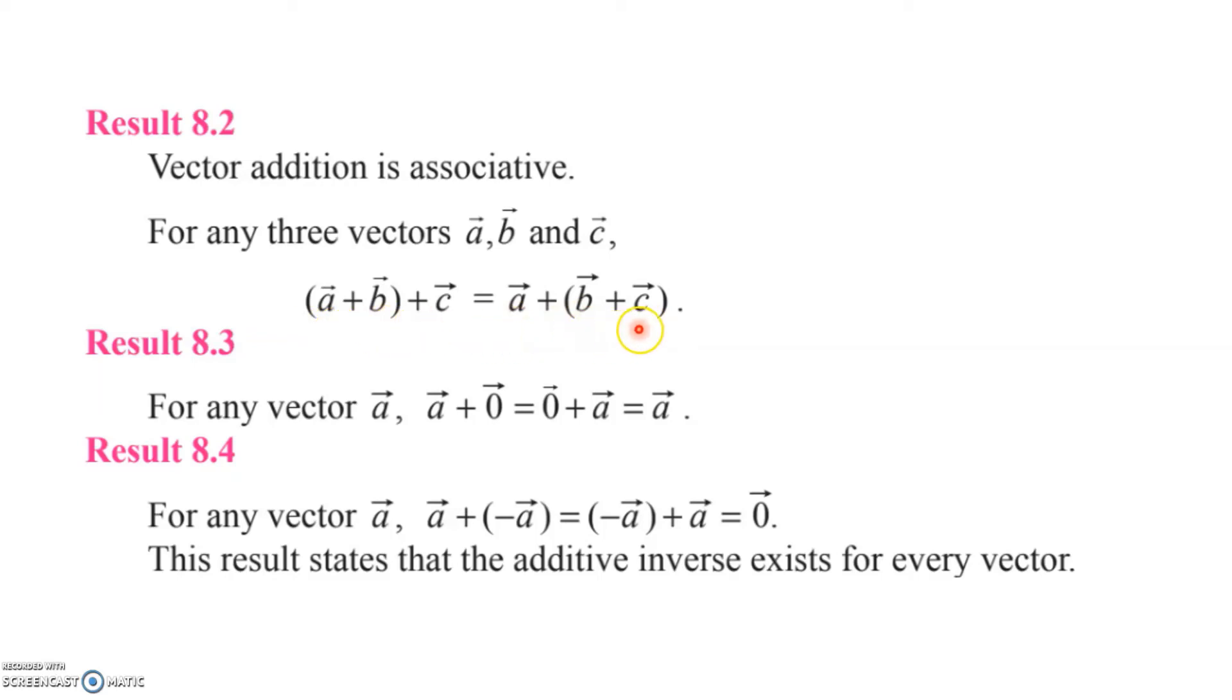If you add vector a with zero vector, you get a. It's also commutative because if you add zero vector plus a, it is again vector a.